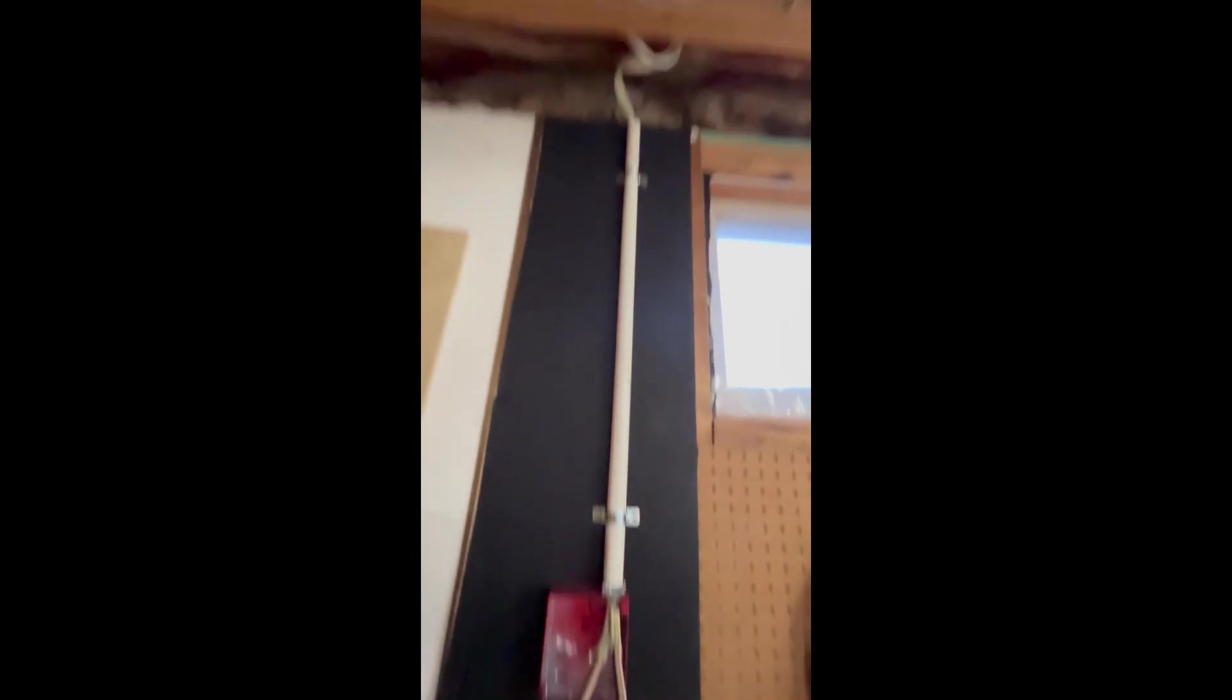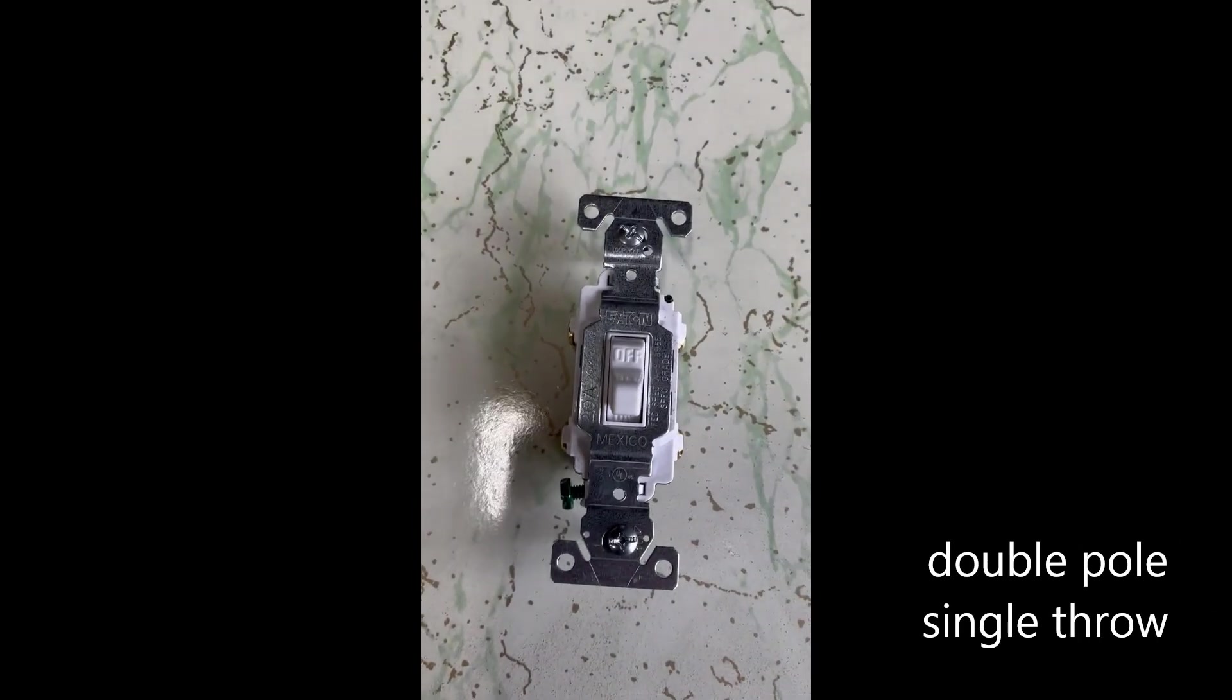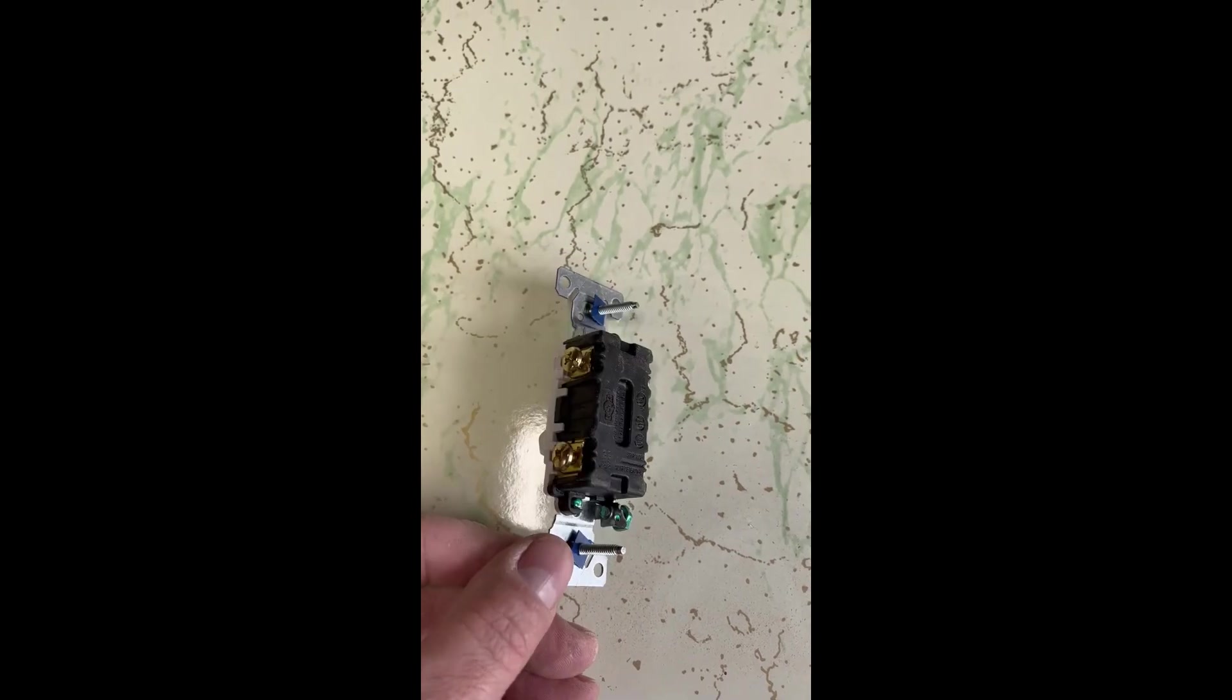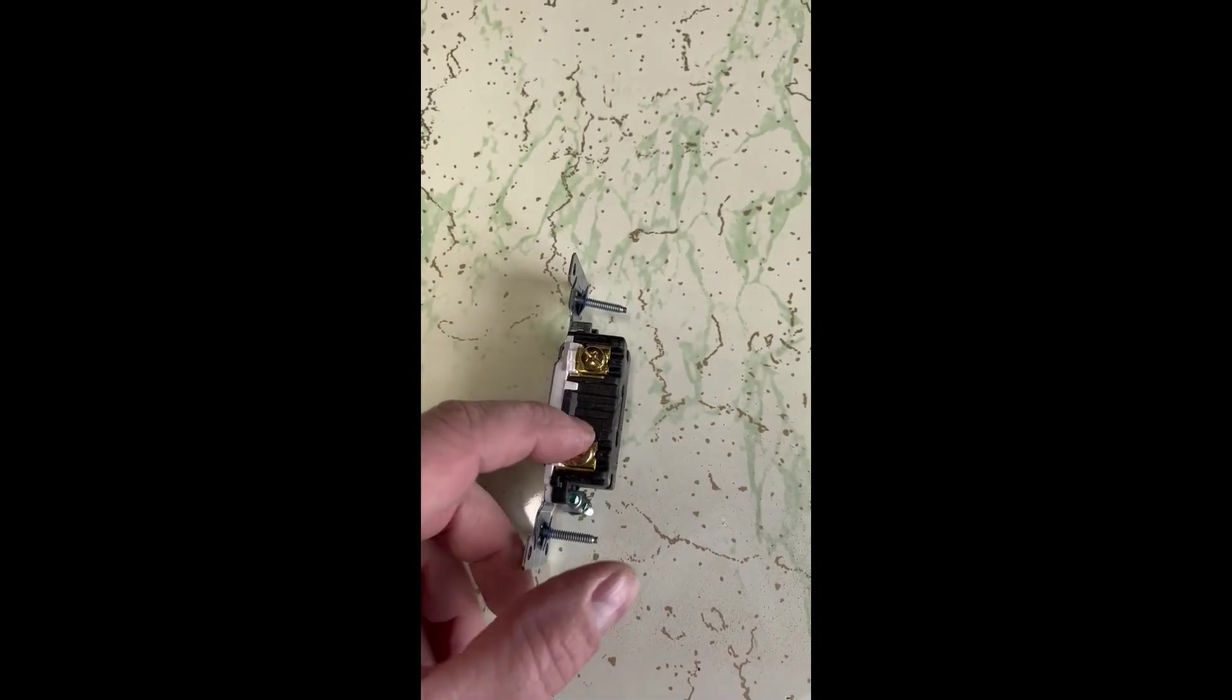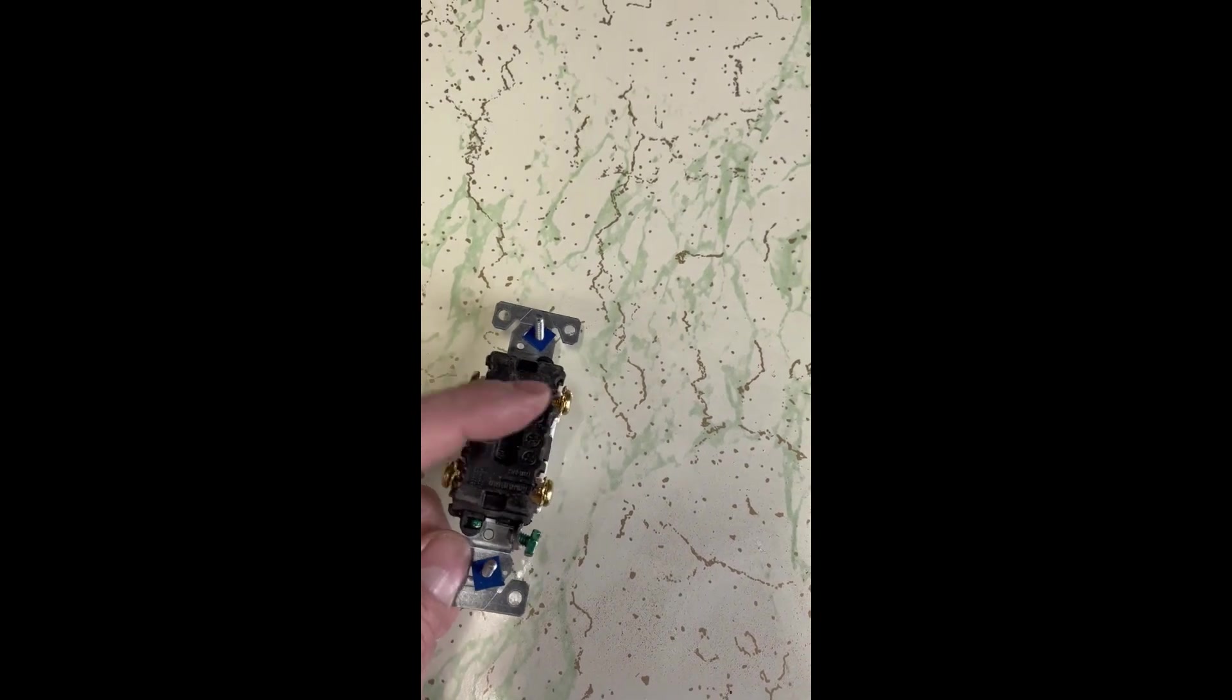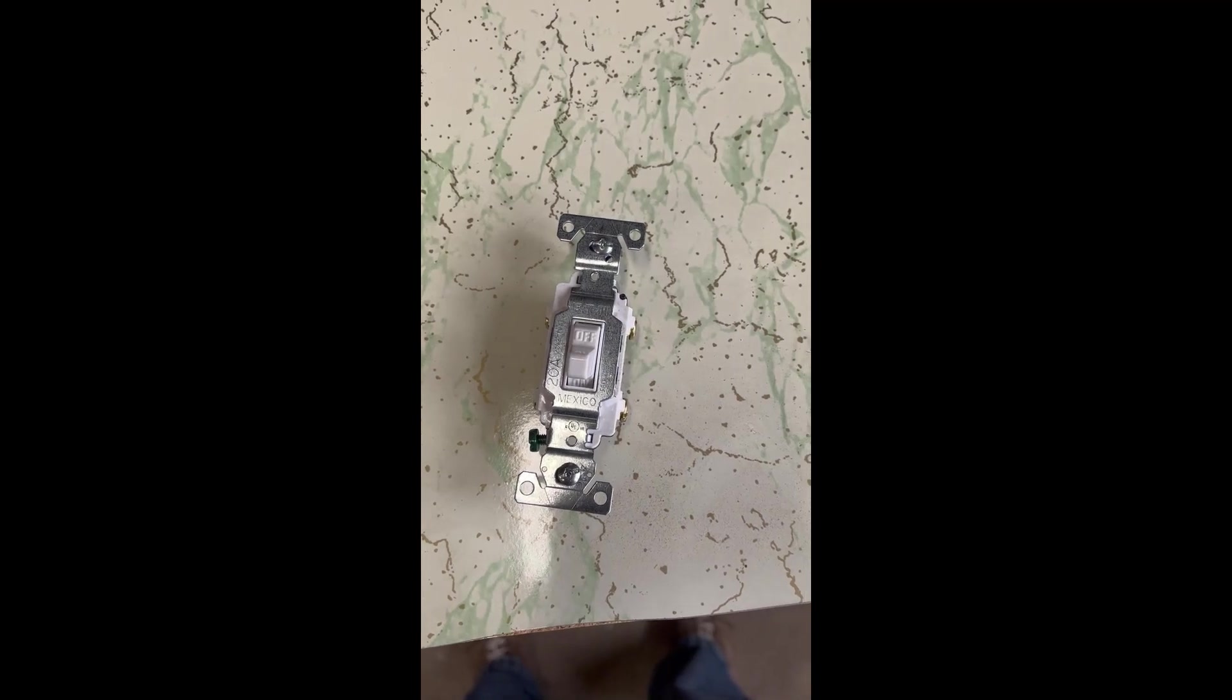For this project I am using a double pole single throw switch, meaning that it actually will insulate two circuits. This is different than a normal light switch. These two will be connected when the switch is thrown, and these two will be connected, but they will not connect across. This way I can make sure to isolate everything when I throw the switch.